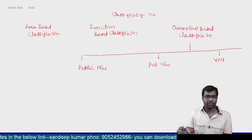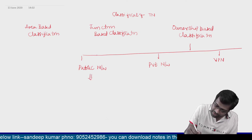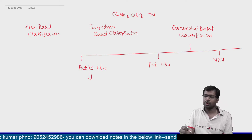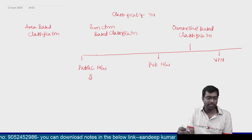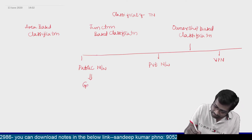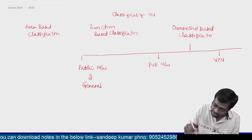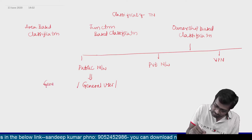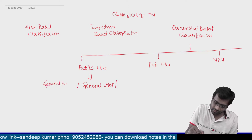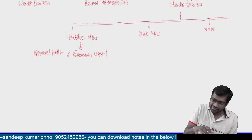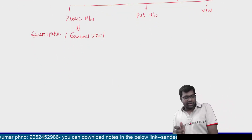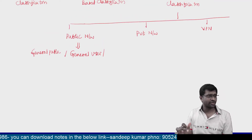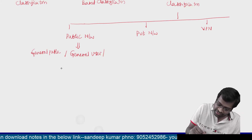What do you mean by a public network? A public network is one where the network is available for general users — all users. It is called a public network. These networks are not costly; they are very cheap.